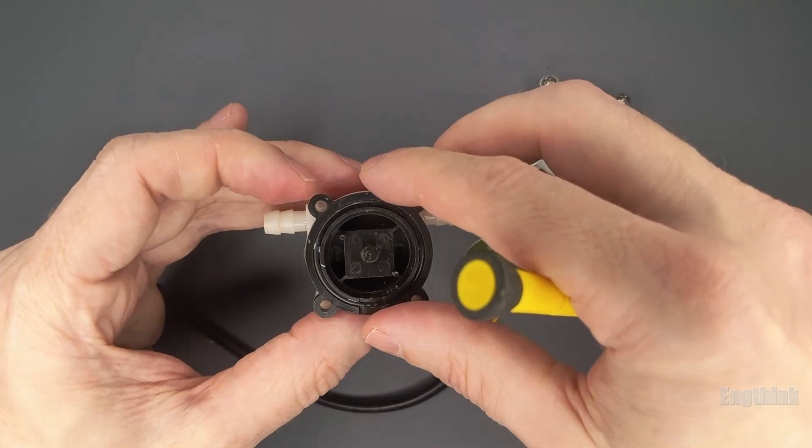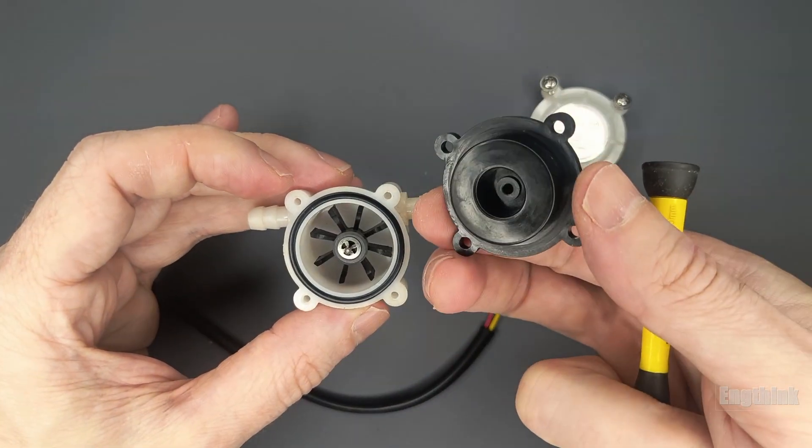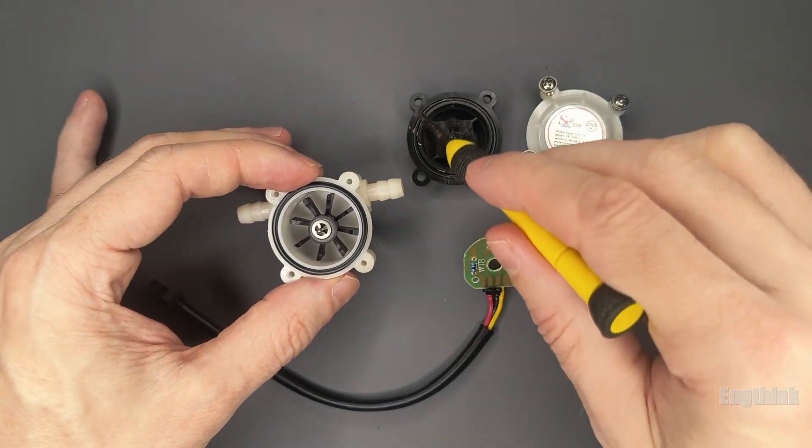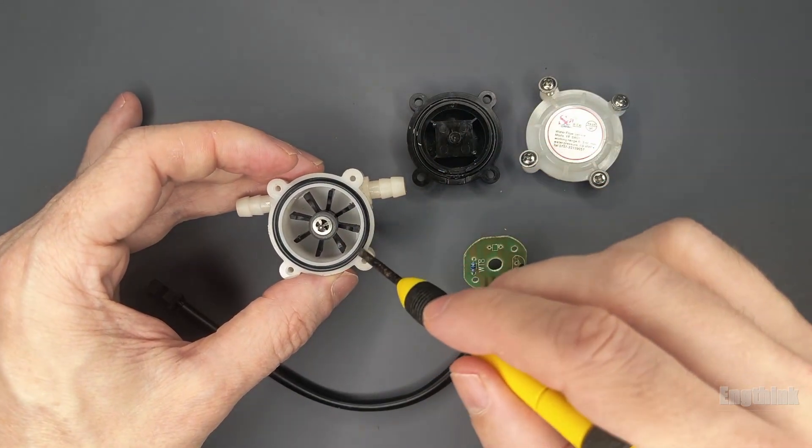Interestingly, there's a second cover that separates the electronic circuitry from the liquid passing through the sensor. This part is sealed with a rubber ring, which isolates the electronics from water, preventing damage or corrosion.